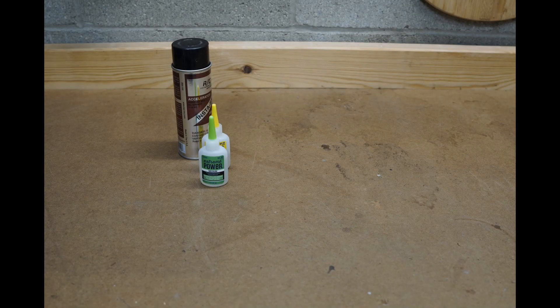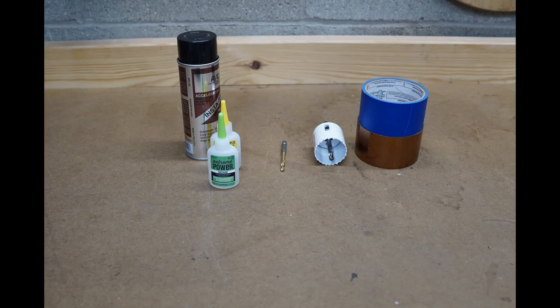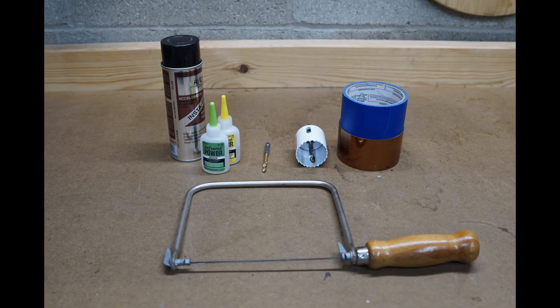Some tools you're going to need is some CA glue and activator, 3/16th drill bit, a 1 and 3/4 hole saw, some tape - we've got painters tape and Kapton tape, and some sort of handsaw.